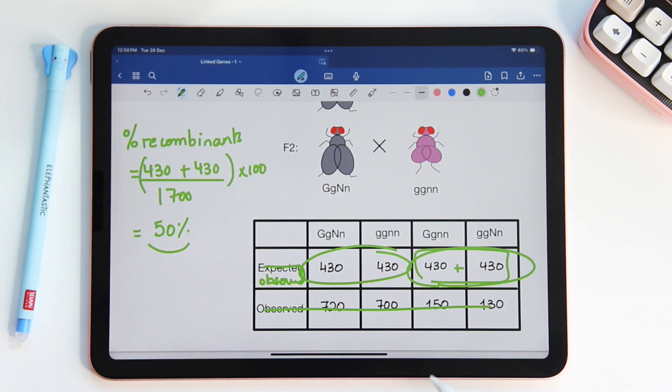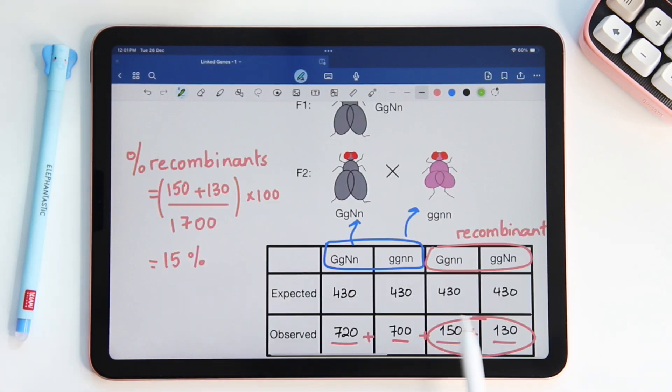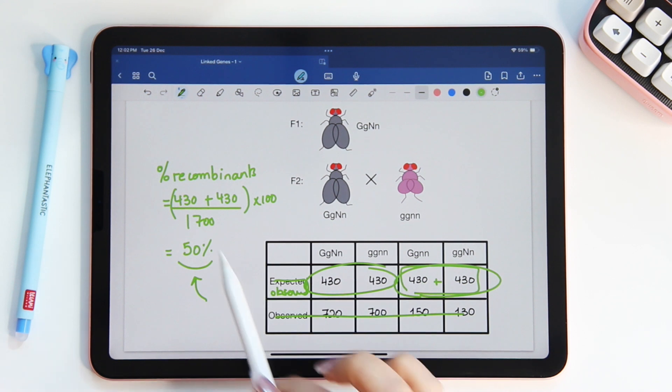But we agreed that a ratio of 1 to 1 to 1 to 1 means that the two genes are on different chromosomes. So what does this 50% represent? In the real scenario with our observed results, we got a percent recombination of 15%. Therefore, if the recombination frequency is less than 50%, we say that the two genes are linked.